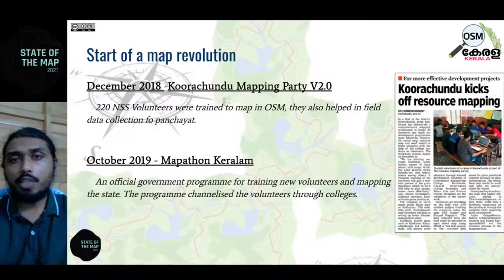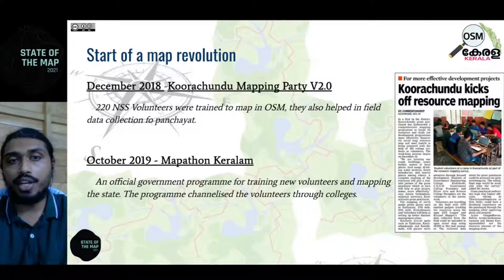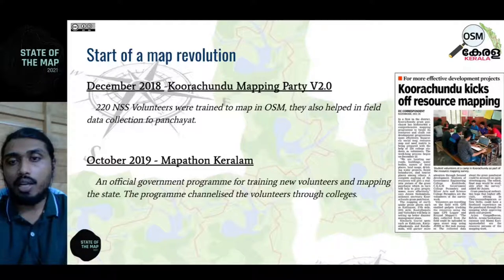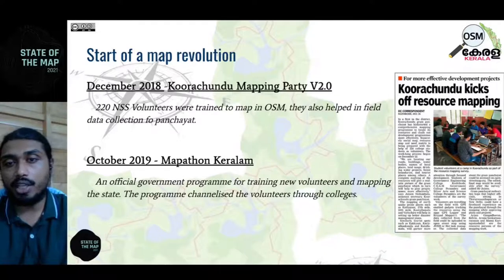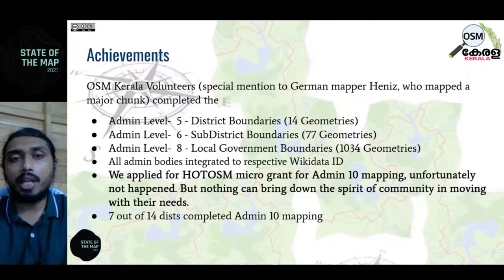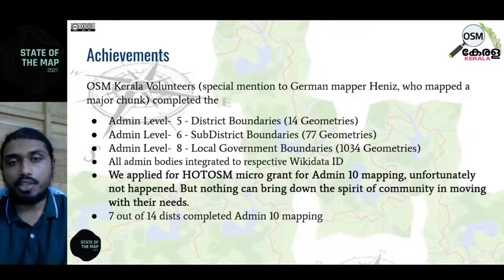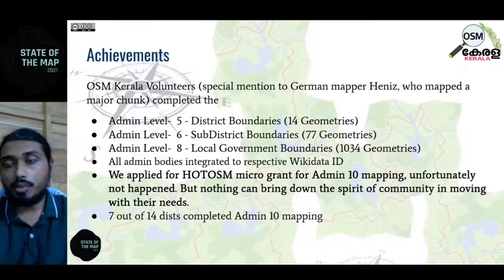This increased OSM activity in Kerala. In 2018, Kurachund village panchayat mapping party version 2 was launched; 220 student volunteers were trained and mapped. Inspired by this, the state launched an event called Mapathon Kerala, where the state funded trainers to channel volunteers and train them how to map in OSM. These are our achievements: we completed admin level 5, admin level 6, and admin level 8 - that is 2034 geometries. We applied for the OSM grant 2020 for admin level 10.